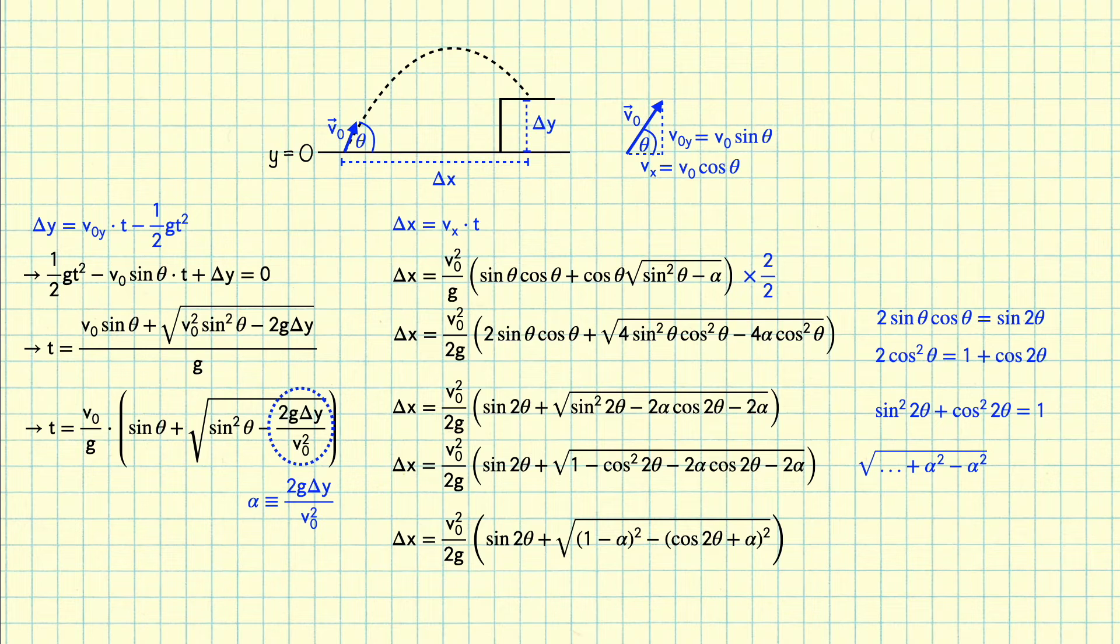What we want to do is maximize this quantity delta x with respect to theta. So that means we have to take a derivative with respect to theta and set it equal to 0. Note that this will give both maximum and minimum solutions. We already know what the minimum solution is, it's when theta equals 90 degrees.